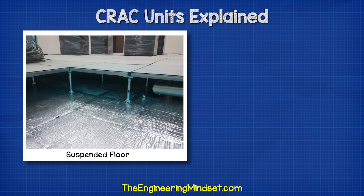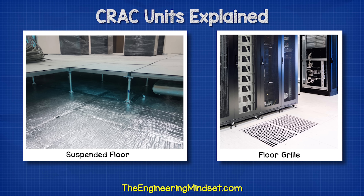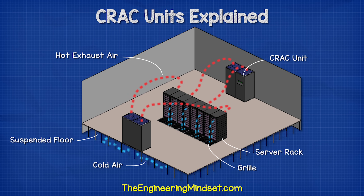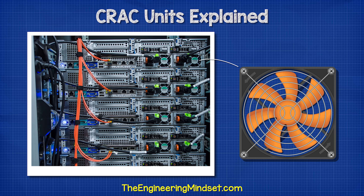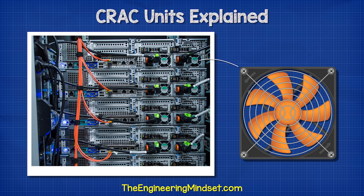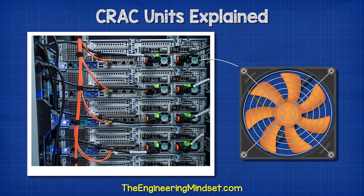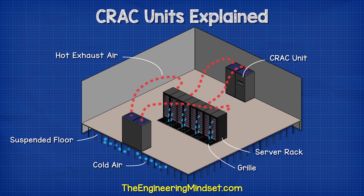The floor tiles are made from thick solid materials which contain the air within the void. Some tiles have grills built into them, and these are strategically placed near the servers so that cold air can exit the void and be sucked directly into the servers. The servers have small fans installed to move air across the circuit boards and cool them down, similar to a PC or laptop. This air carries the unwanted heat away, where it is sucked back into the CRAC unit and removed from the room.